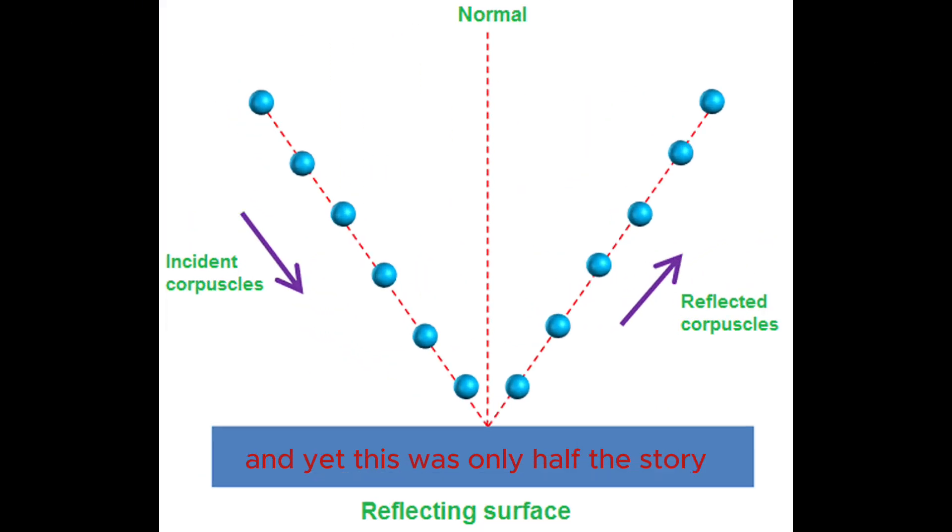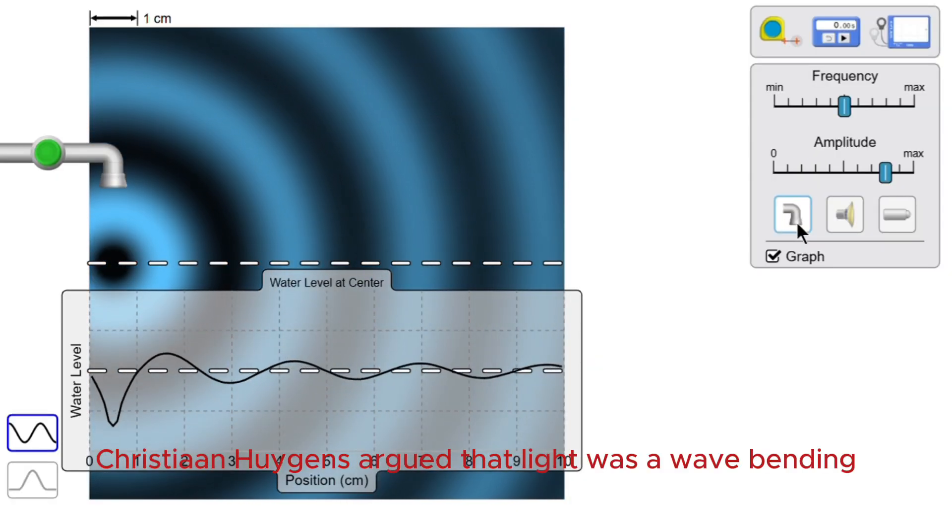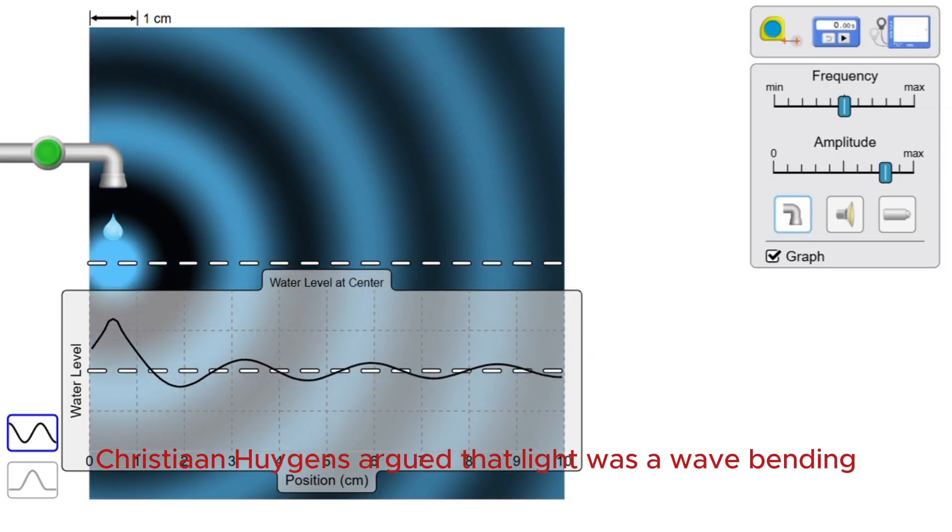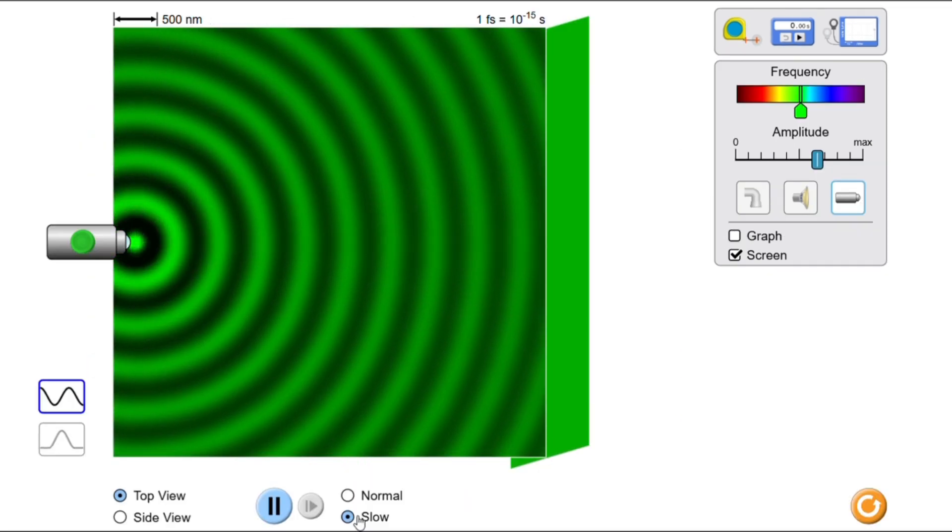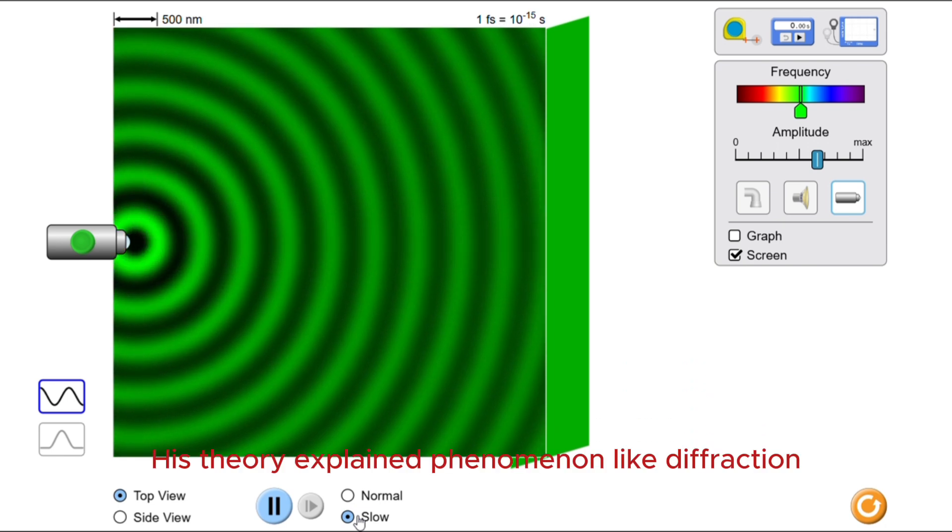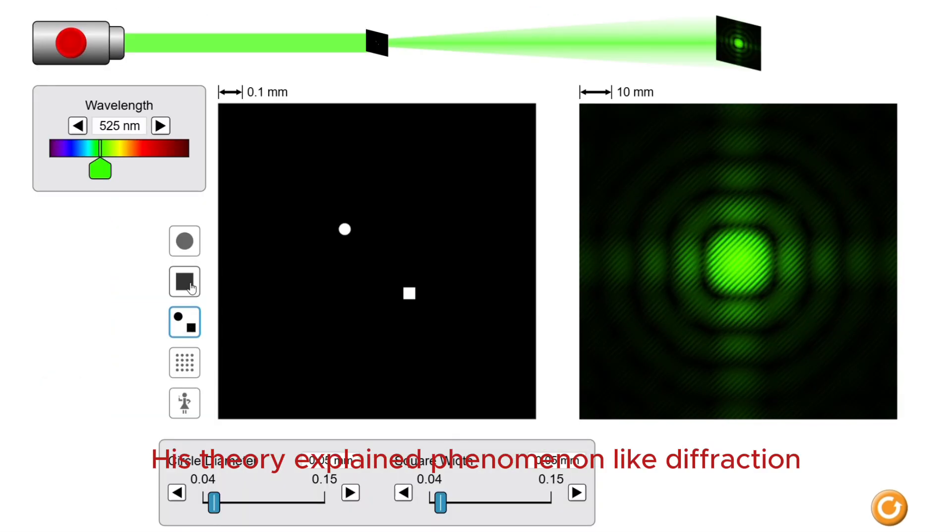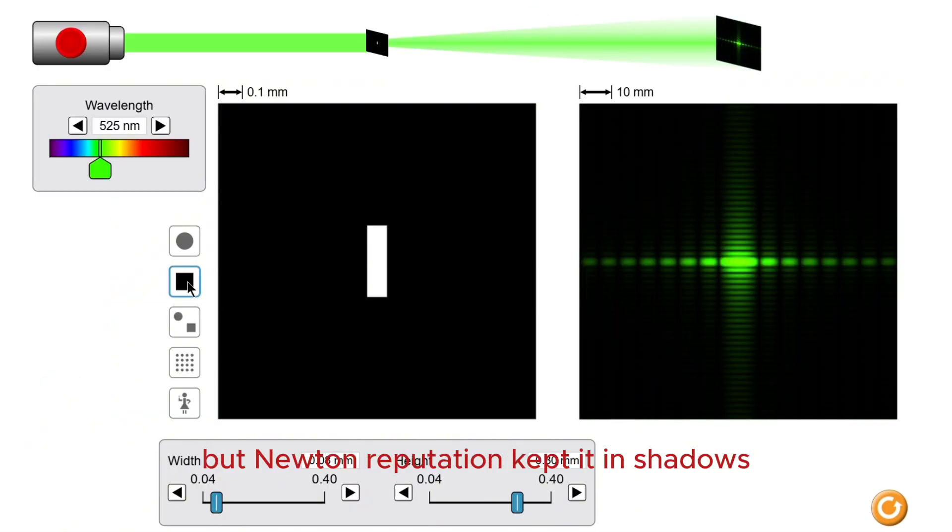And yet, this was only half the story. In the same era, Christian Huygens argued that light was a wave, bending, spreading and interfering through space. His theory explained phenomena like diffraction, but Newton's reputation kept it in shadows.